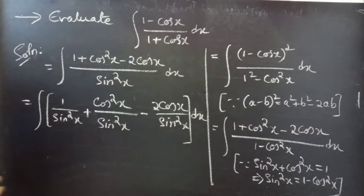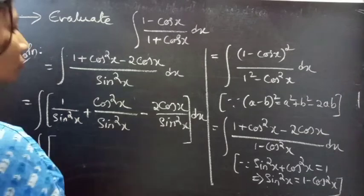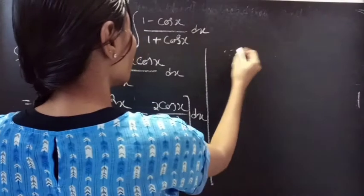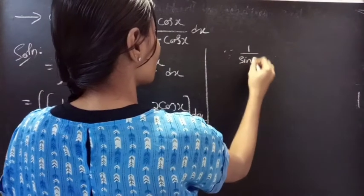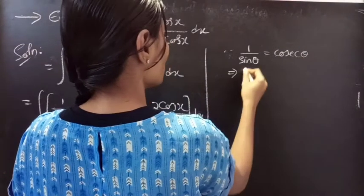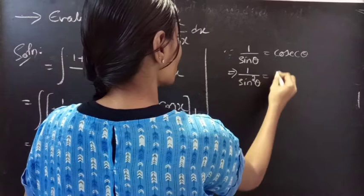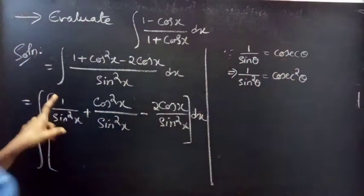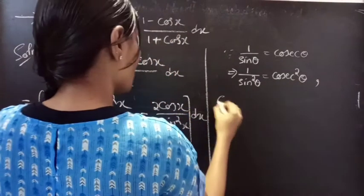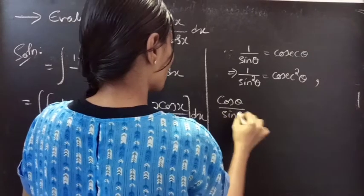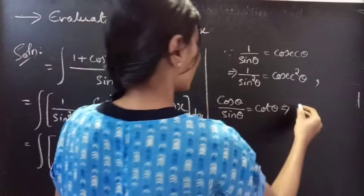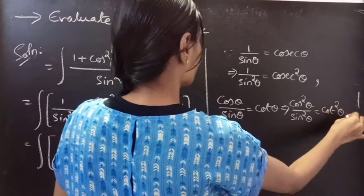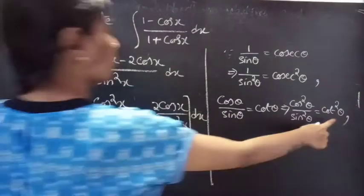We know that the reciprocal of sin theta is cosecant theta, so 1 over sin squared x equals cosecant squared x. Also, cos theta over sin theta equals cot theta, and squaring both sides gives cos squared theta over sin squared theta equals cot squared theta. So we can replace the second term by cot squared x.